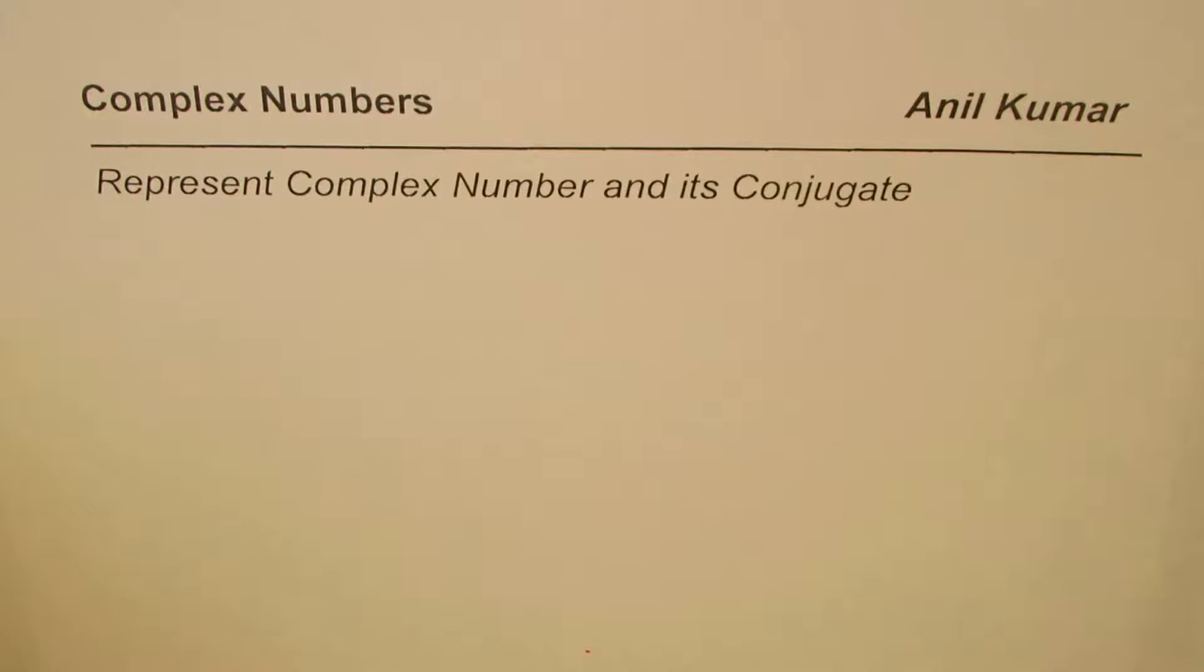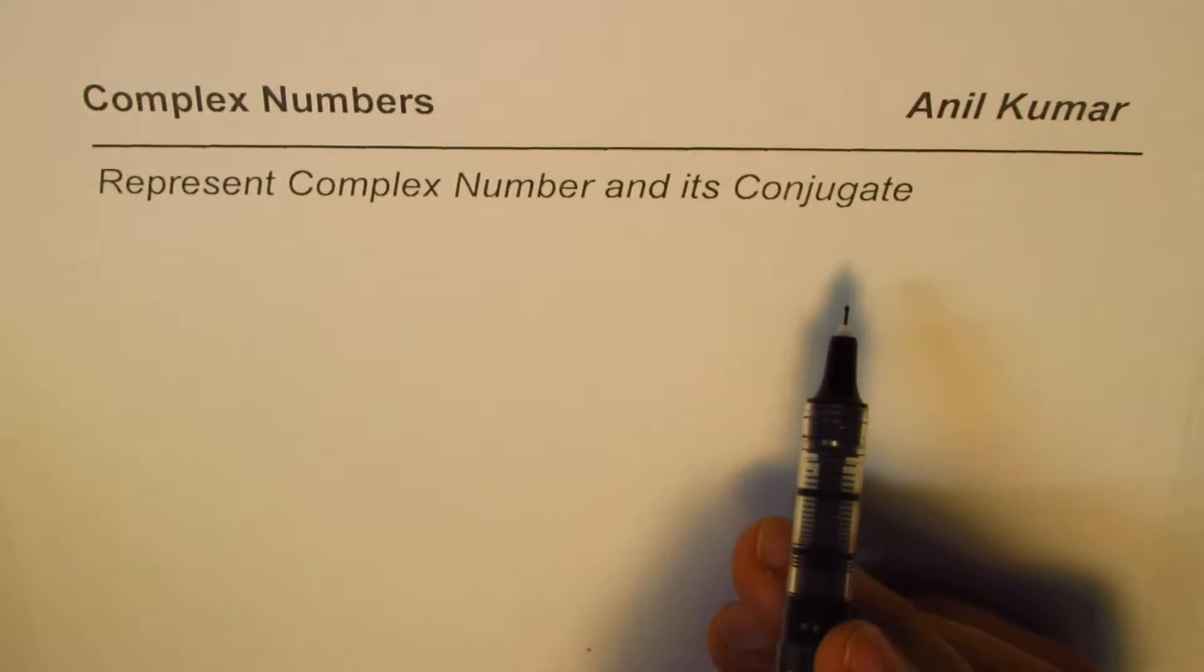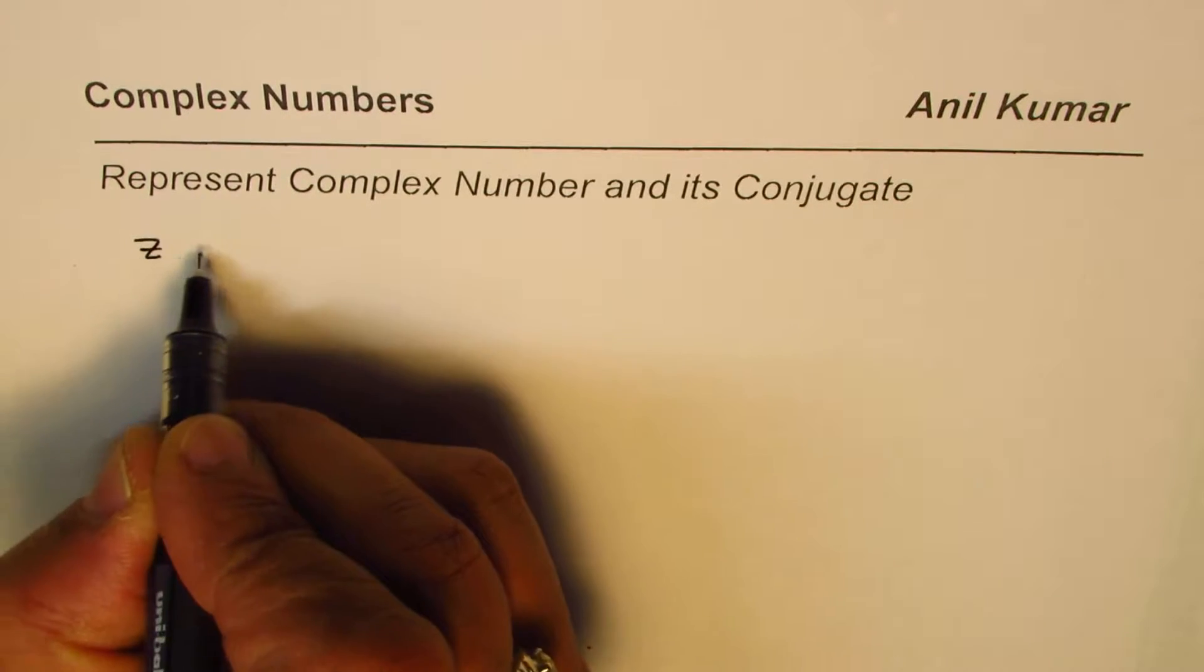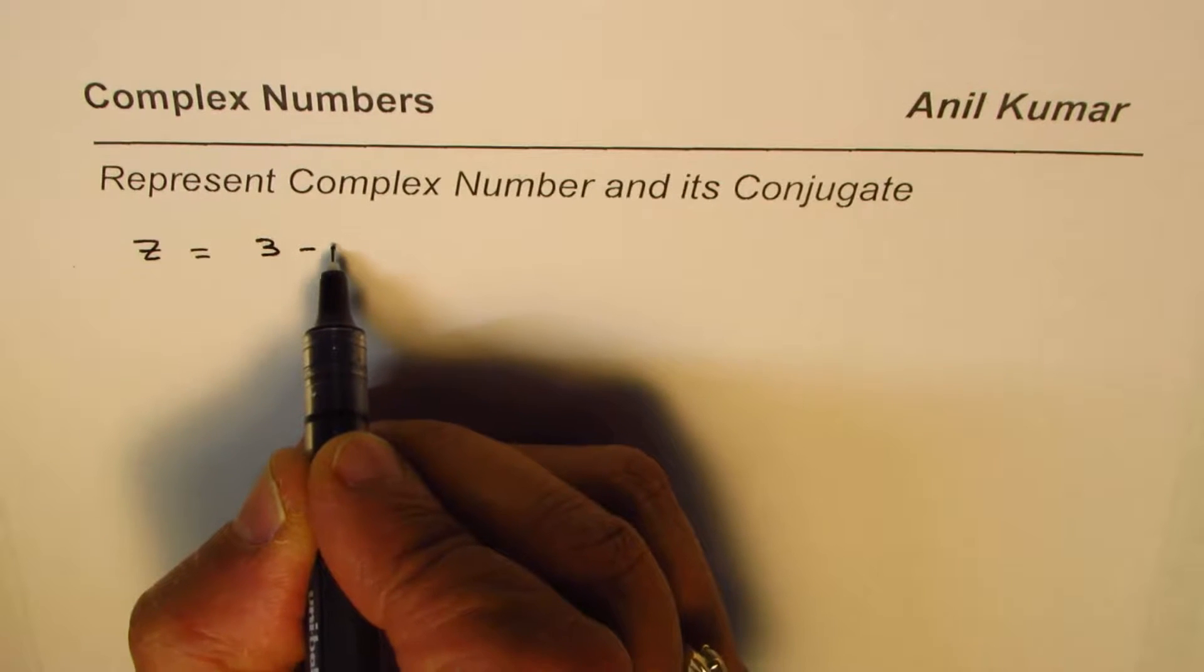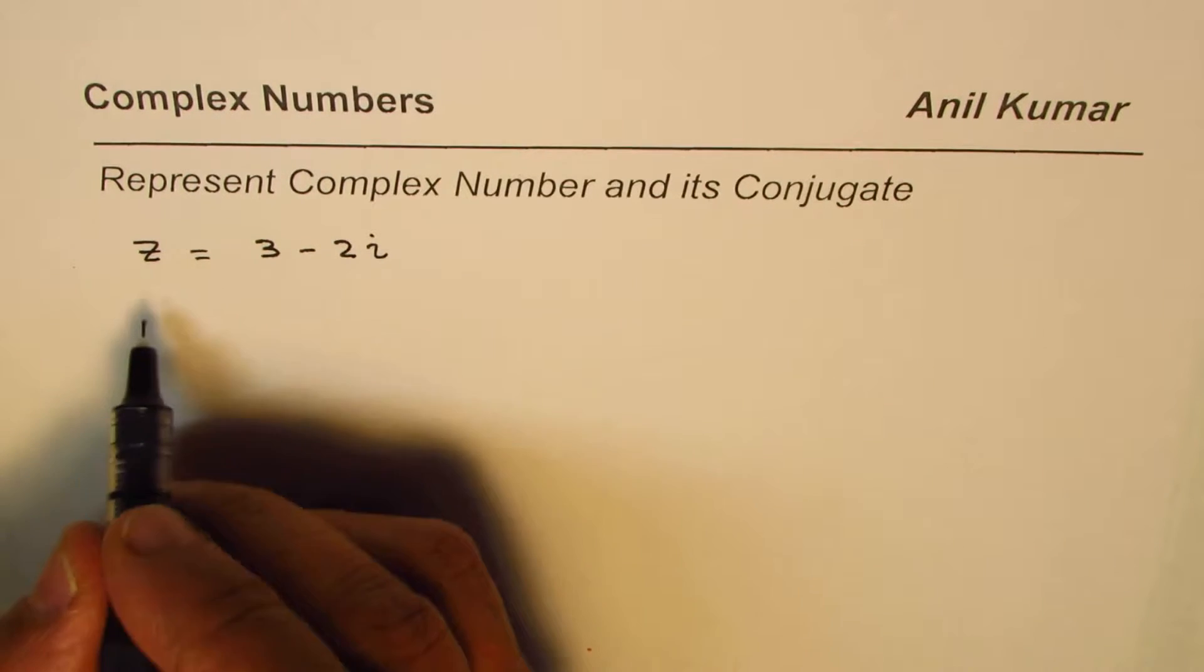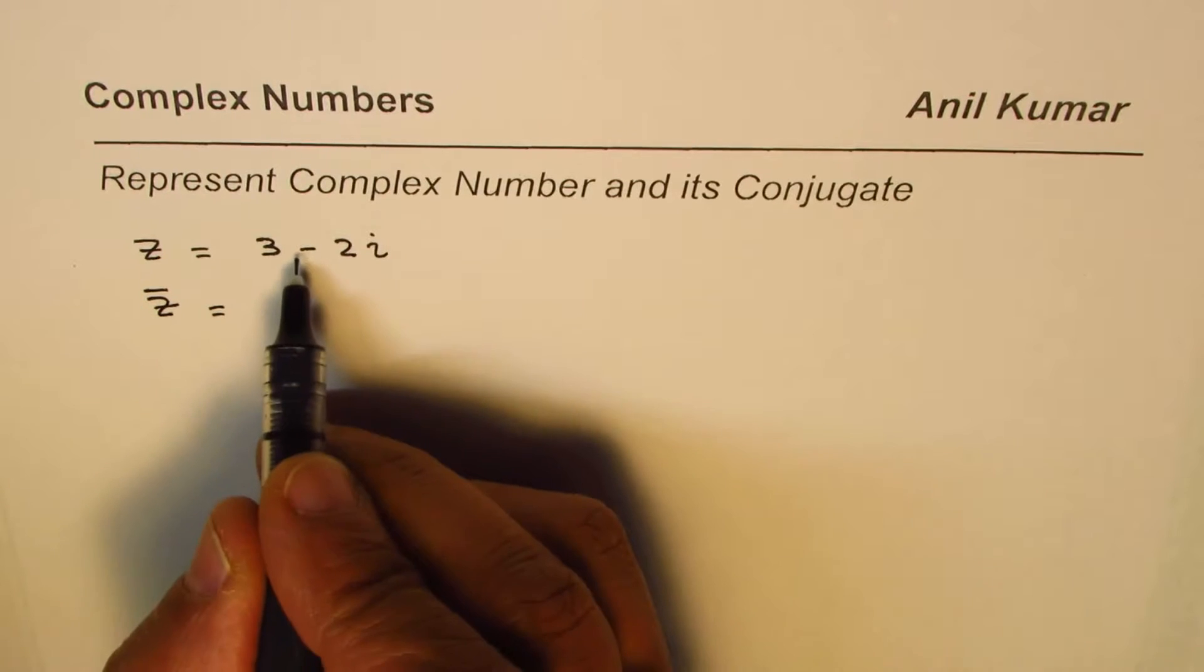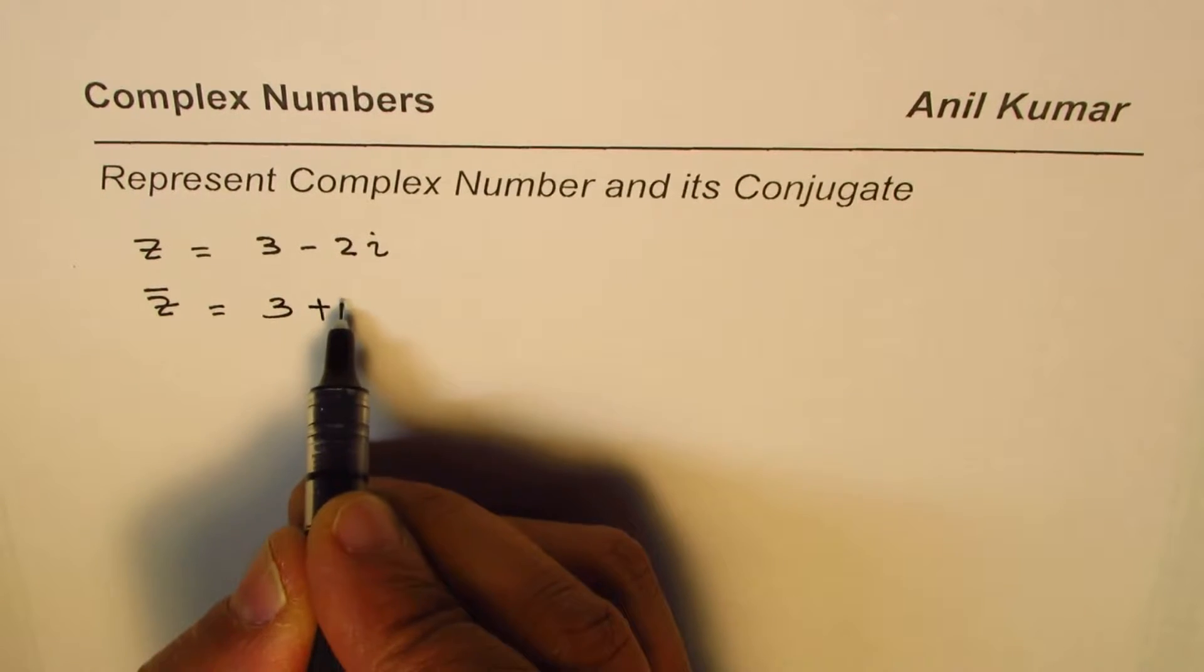I'm Anil Kumar and here is a very interesting video to represent complex numbers and their conjugates. Let me take an example. Let's say we have a complex number z which is written as 3 - 2i. What will be the conjugate of this? Well, the conjugate, normally written with a bar, will use the plus sign. We just change the sign. It becomes 3 + 2i.